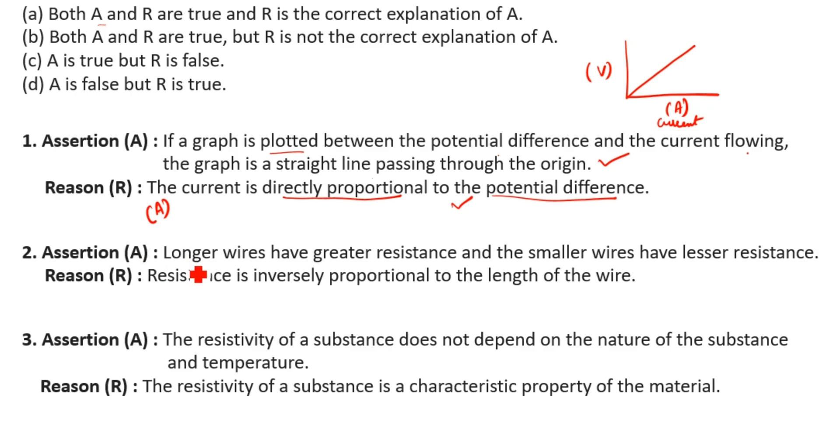Assertion A: Longer wires have greater resistance and smaller wires have lesser resistance. Yes, smaller wire means lesser resistance, and longer wire means greater resistance. This is correct, so A is true.